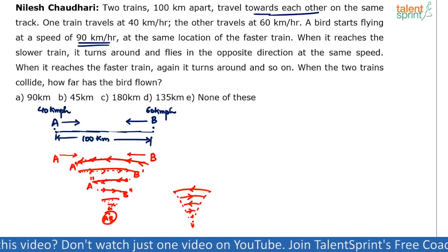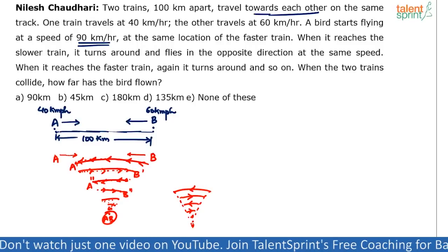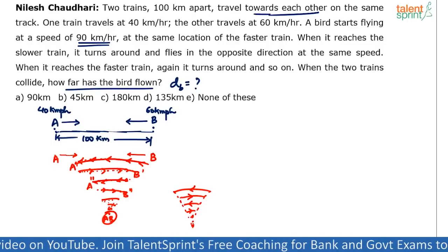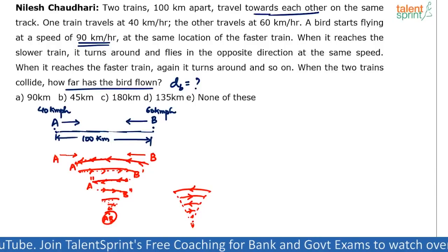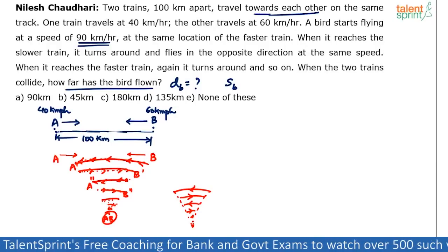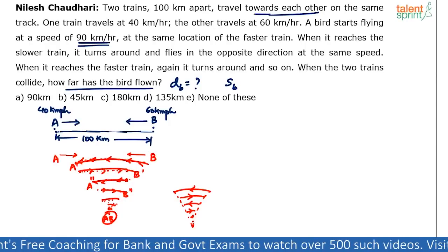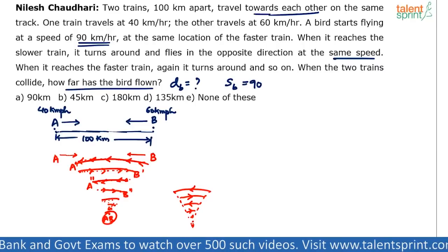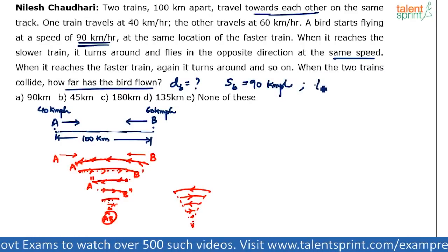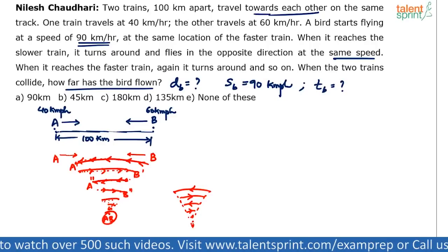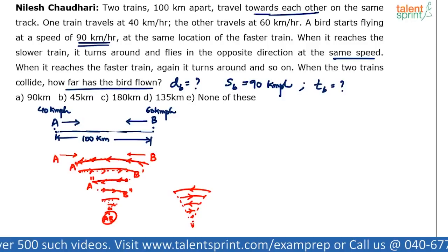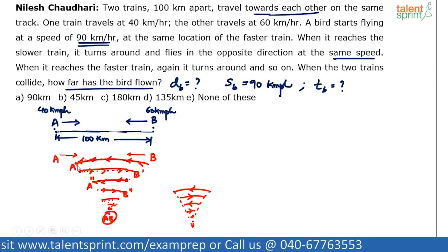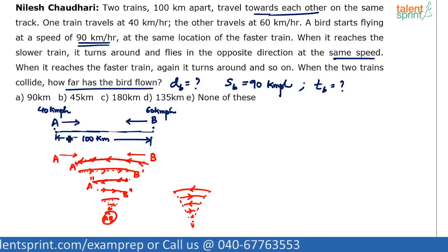To find the distance traveled by the bird, I need two things: speed and time. Speed of the bird is given — 90 kilometers per hour — and it never changes, since it always flies at the same speed in both directions. What I need to find is the time for which the bird has flown, which equals the time taken by the two trains to collide.